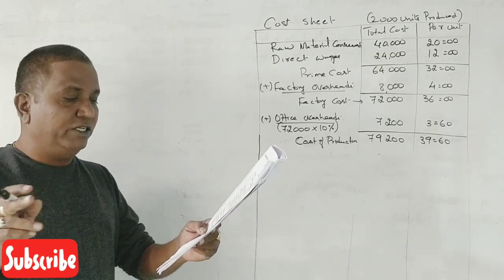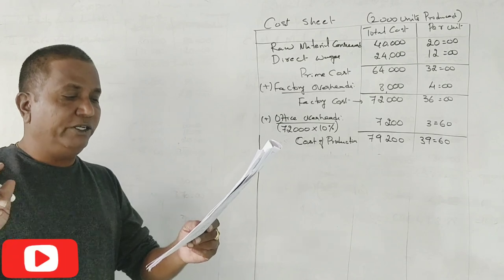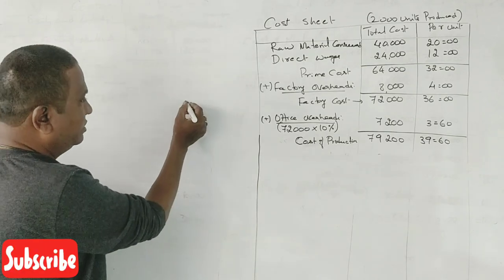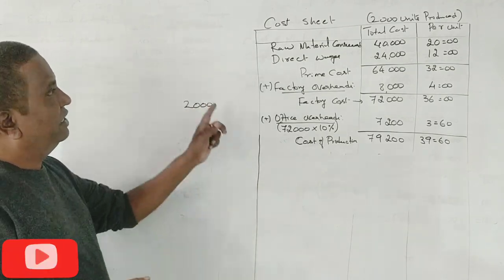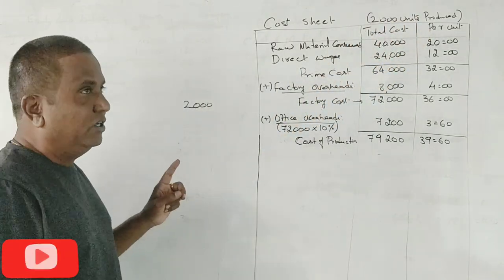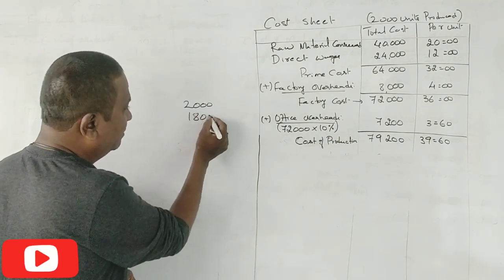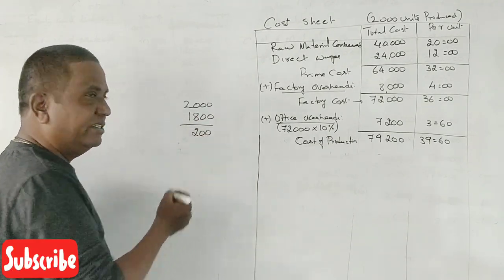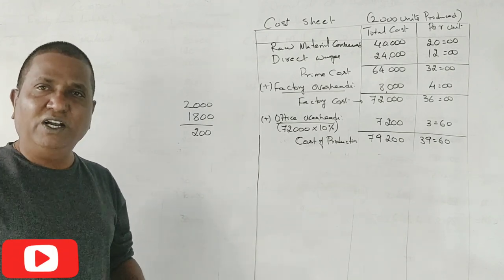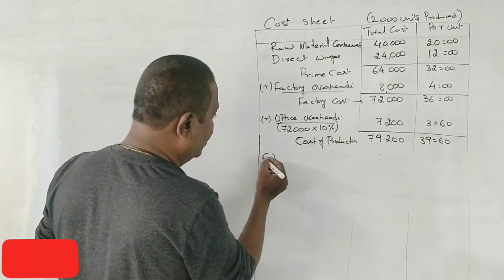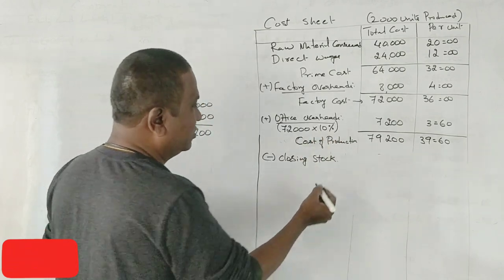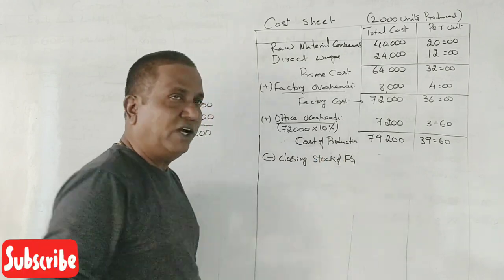Units produced 2,000 units and sold is 1,800 units at 50 rupees per each. How many units we produced? 2,000 units. As we have given, we have taken here. How many units we have manufactured? 2,000. But how many units we sold? 1,800. What about remaining 200 units? We have not yet sold. It's called closing stock. Always closing stock should be deducted.